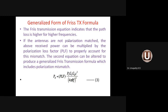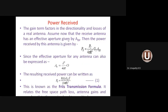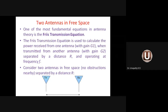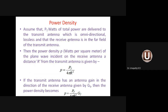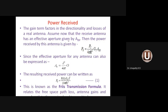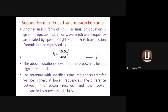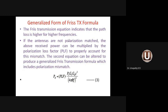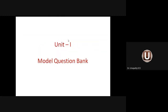This is an important topic, likely worth 10 or 8 marks in examination. The Friis transmission formula derivation requires: diagram of two antennas, expression for power density, expression for power received, first form, second form involving speed of light and frequency, then bring in polarization factor for the generalized form.